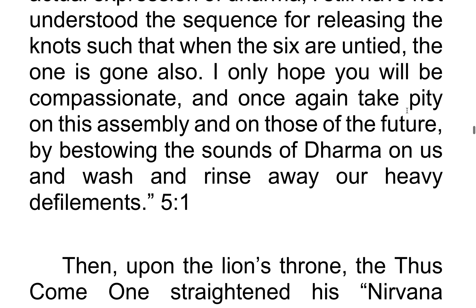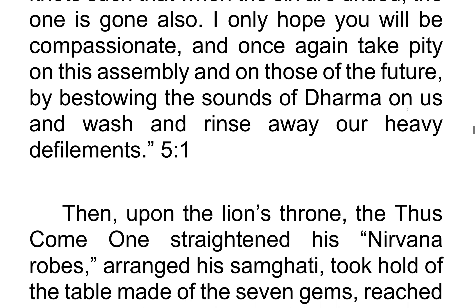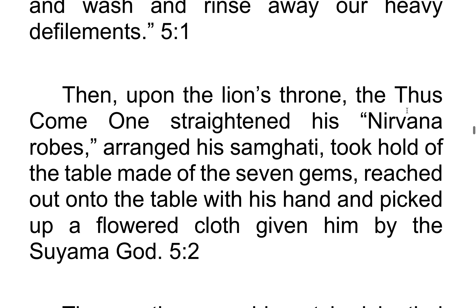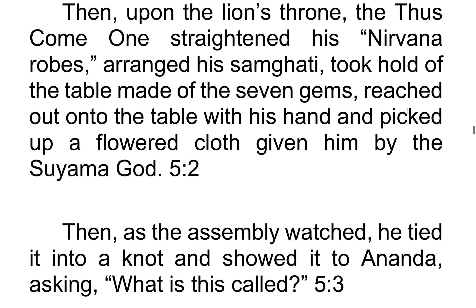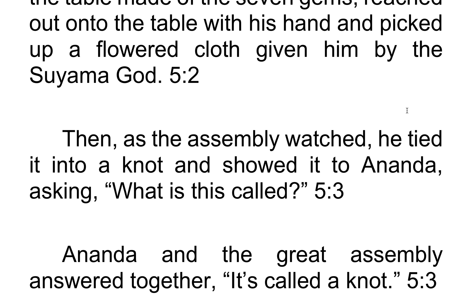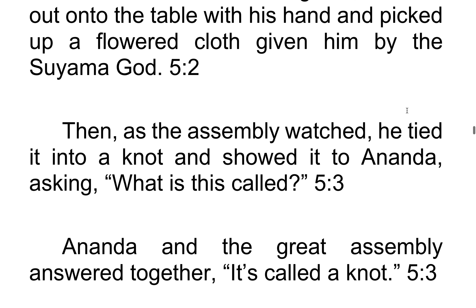Then upon the lion's throne, the World Honored One straightened his Nirvana robes, arranged his Samghati, took hold of the table made of the seven gems, reached out onto the table with his hand, and picked up a flowered cloth given him by the Suyama god. Then, as the assembly watched, he tied it into a knot and showed it to Ananda, asking, "What is this called?" Ananda and the great assembly answered together, "It's called a knot."